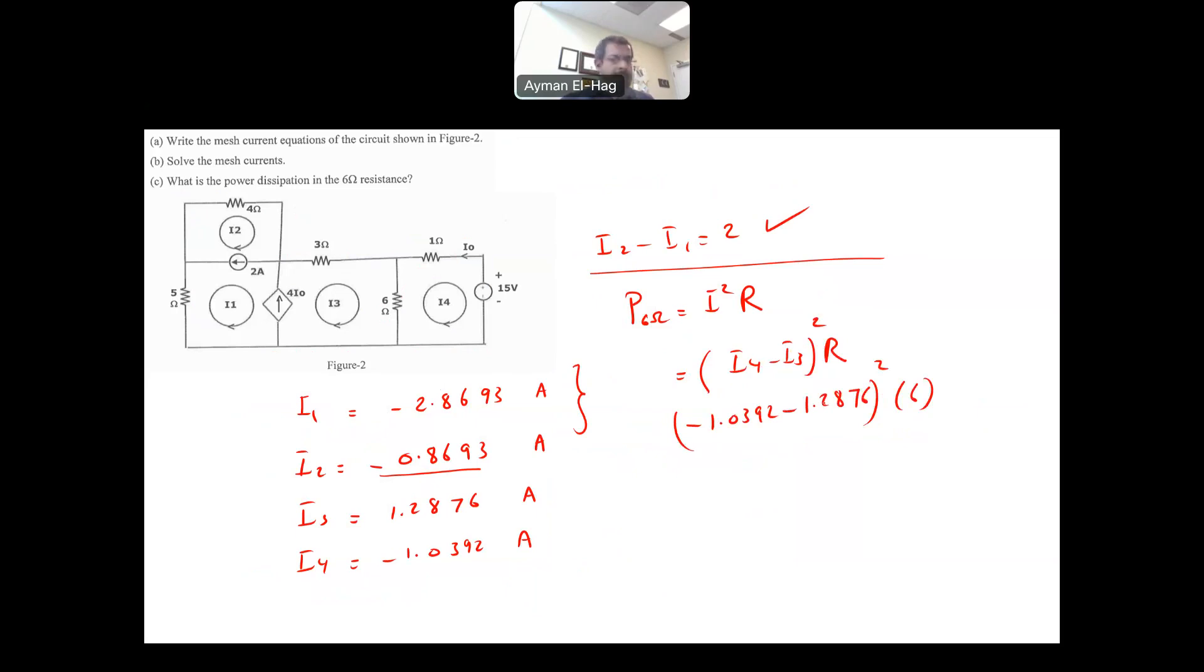So this current would equal to minus 2.3268 squared times 6. So square this times 6. This will be equal to 32.48 watts. This is how much power is dissipated in the 6 ohm. If you do with I3 minus I4, you will get exactly the same answer because of the square, it will get rid of the minus sign. So this is how we approach the mesh analysis. This is the mesh analysis technique.